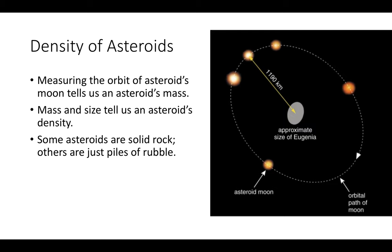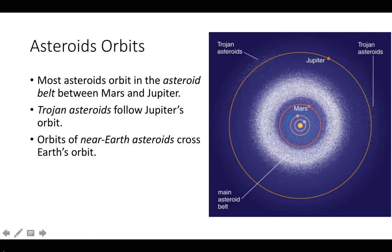Some asteroids are solid rock and some are basically piles of rubble held together. For orbits, we have our main asteroid belt between Mars and Jupiter, and then a secondary belt called the Trojan asteroids with two groupings. They are always 60 degrees in front of Jupiter and 60 degrees behind Jupiter — Jupiter's gravity has a gravitational effect on these asteroids. So there's always a group of Trojan asteroids in front of and behind Jupiter.